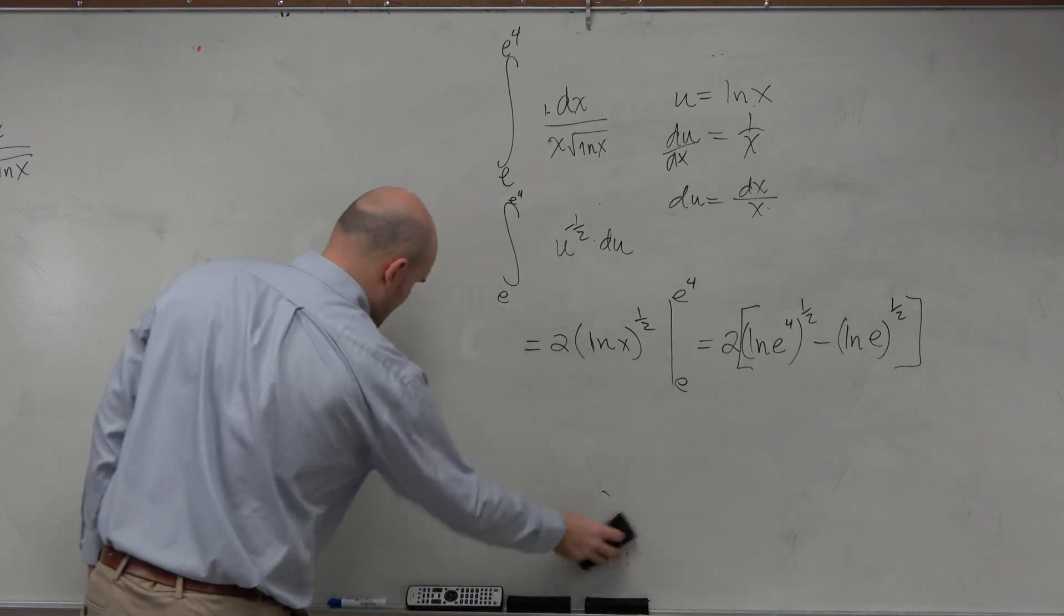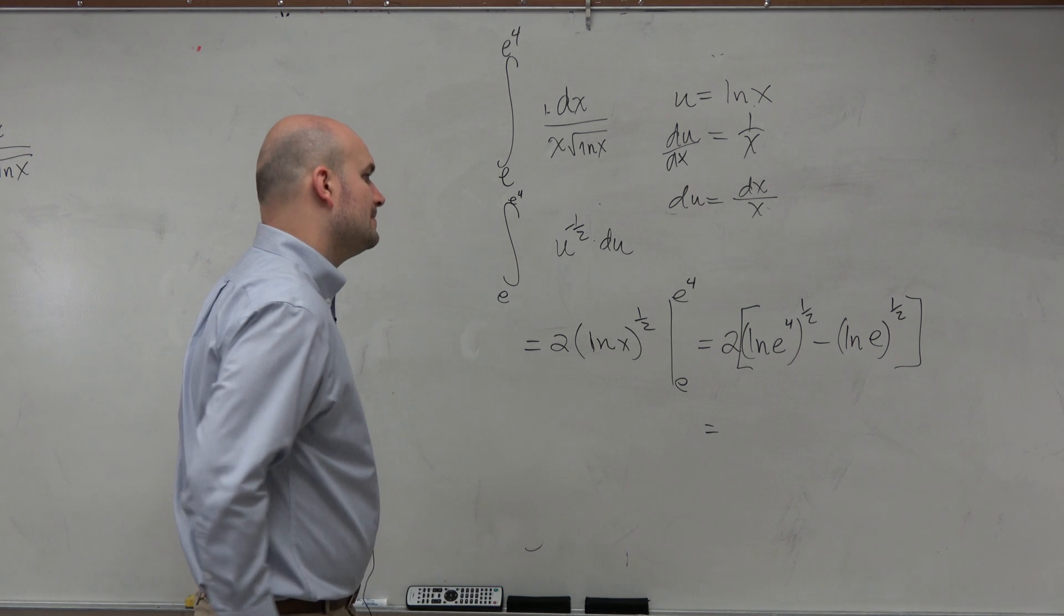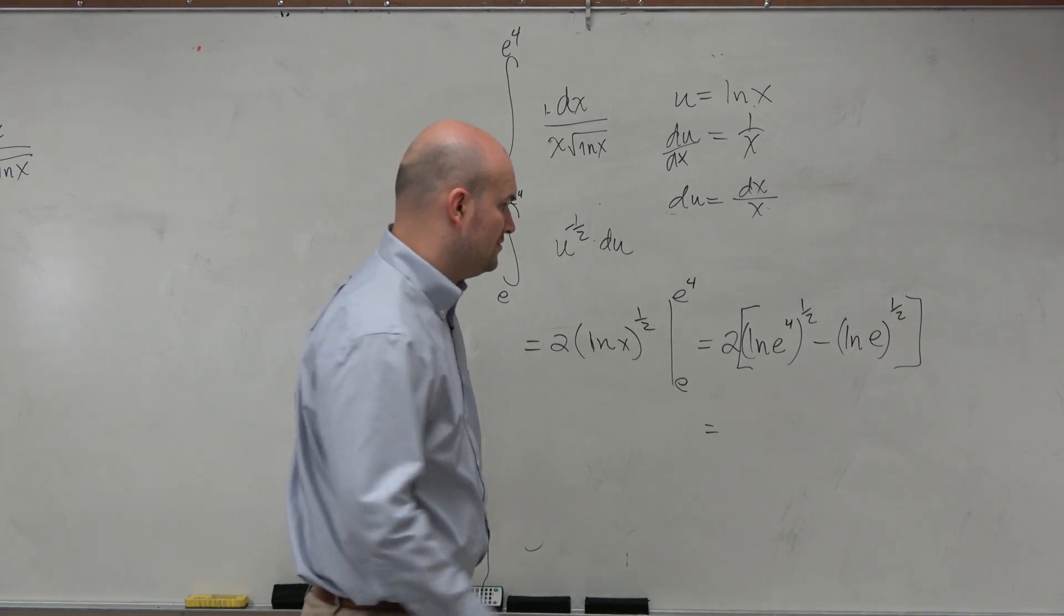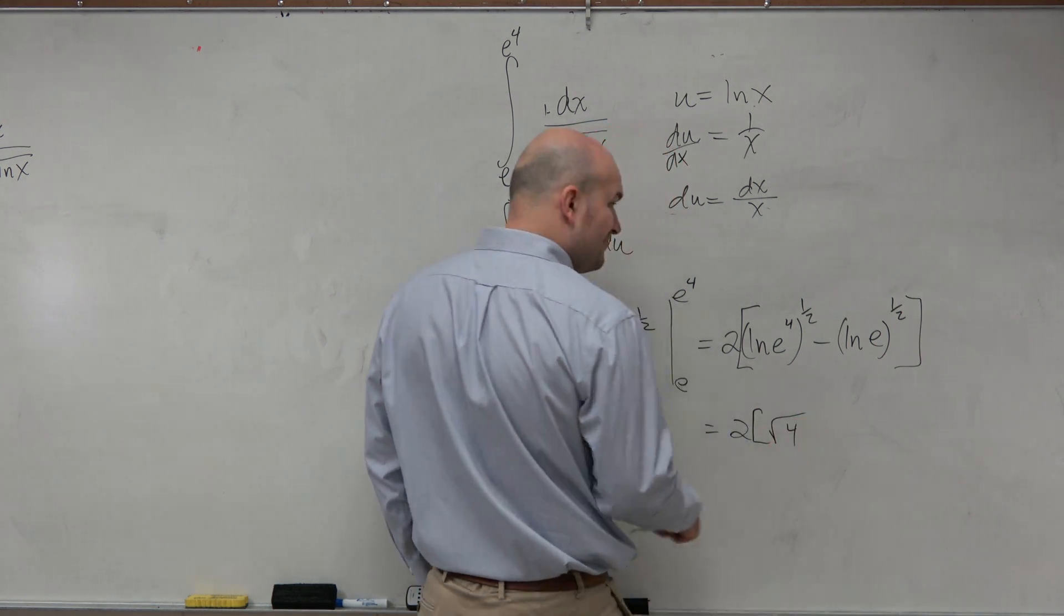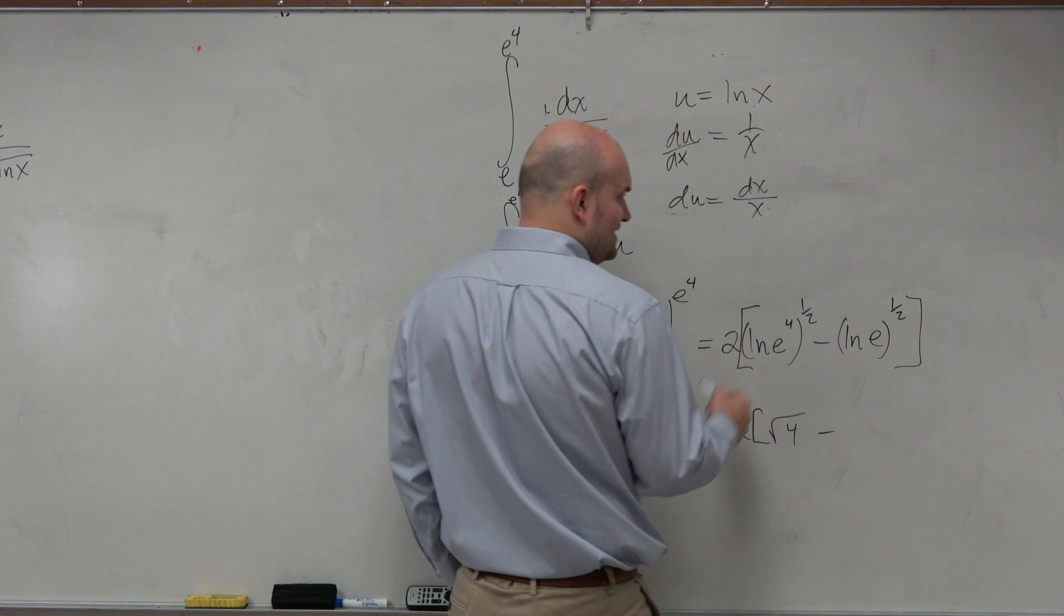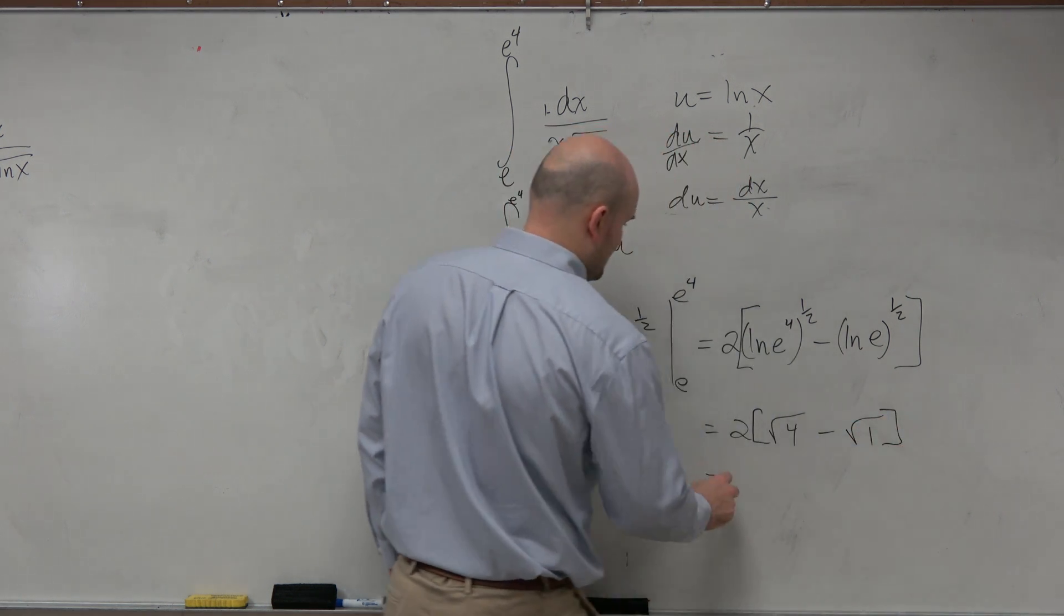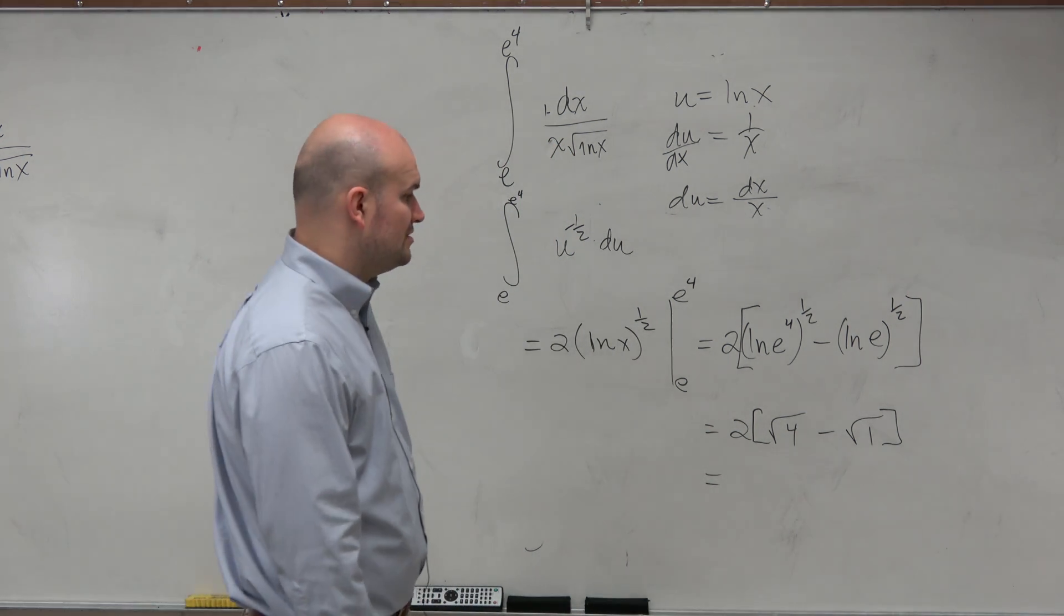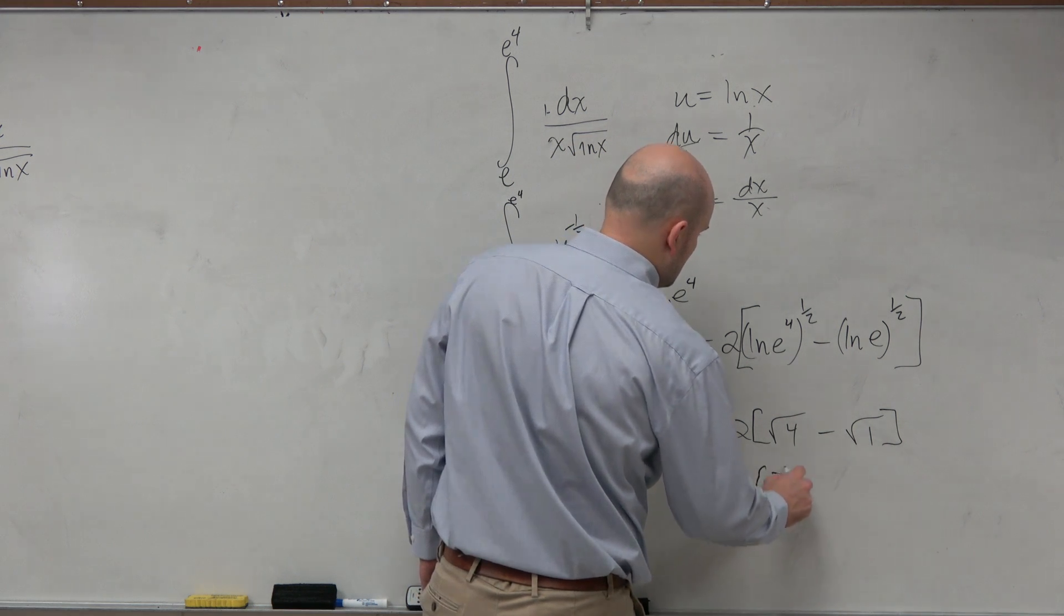I'm going to erase this so I don't get overly confused. Now ln of e is just going to be 4, so it's really 2 square root of 4. And if I'm making a mistake, let me know this time. Minus e to the e is really 1, so it's minus the square root of 1. So we have square root of 4, which is 2, minus square root of 1, which is 1, so it would be 2 times 3, which is 6.